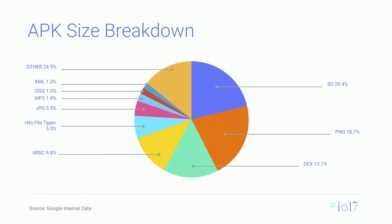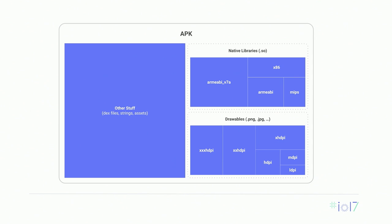When looking at how we could reduce app size, we started by looking at what takes up the most space inside an APK. We analyzed all the apps in the Play Store and looked at the proportion of space taken up by each file type inside the average APK. The chart on this slide shows you the results of this analysis. What you can see is that the top contributors to APK size are .so files, or native libraries, and PNG files — images. Together, these take up roughly 40% of an APK's size on average. And if we look inside some APKs, we can see why these file types take up so much space. Here we have an example APK where we visualize the contents by size, with the size of the boxes indicating the relative size of each component.